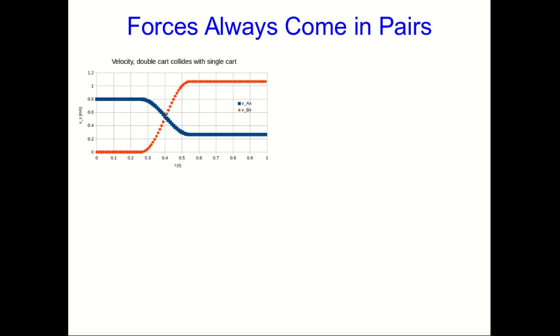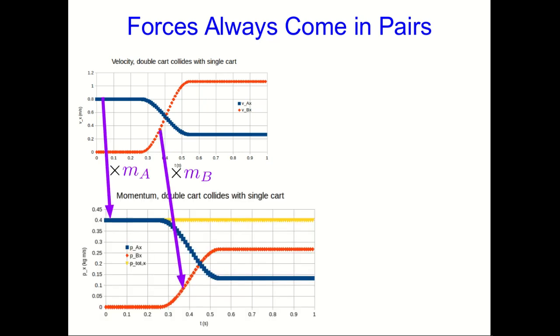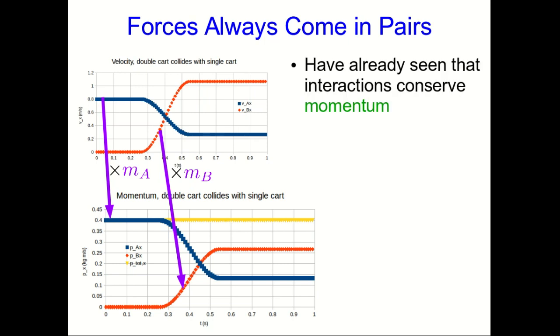So let's think of our usual situation of two carts colliding. And if we just multiply the Vx by t graph by each of the inertias, we get our momentum versus time graph. And we've already seen that interactions conserve momentum. And the way that plays out is that the change in momentum of the one object is always just the negative of the change in the momentum of the other object. So this is just conservation of momentum, and we've seen this plenty of times.